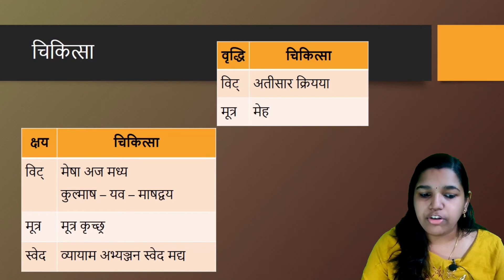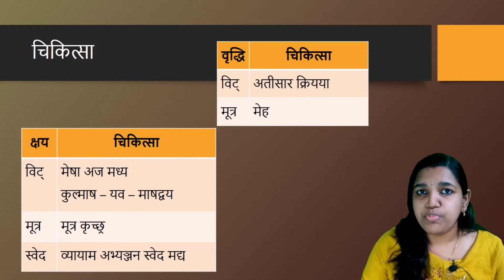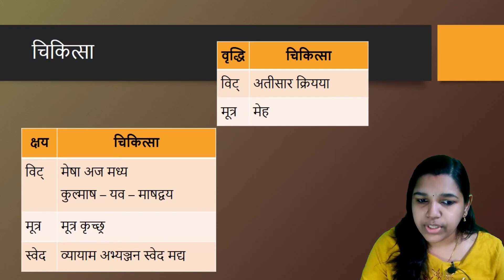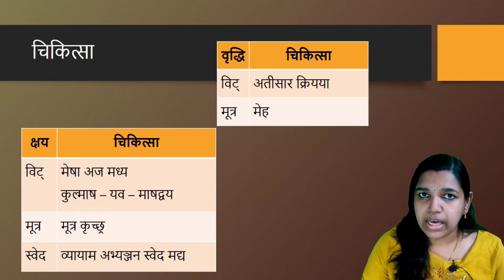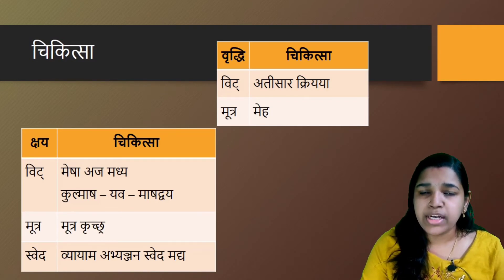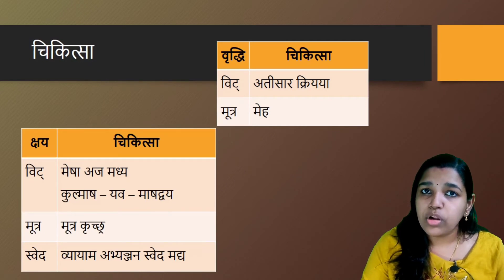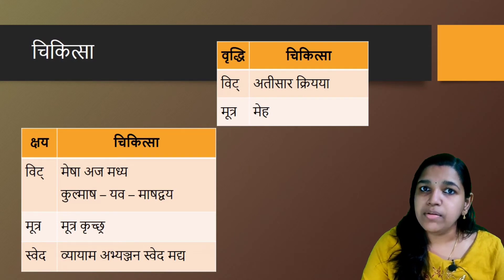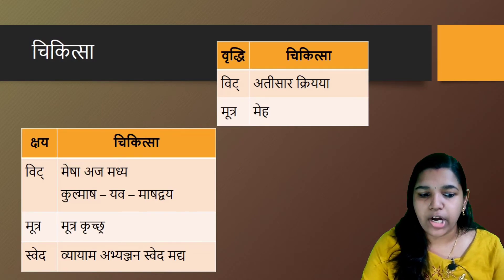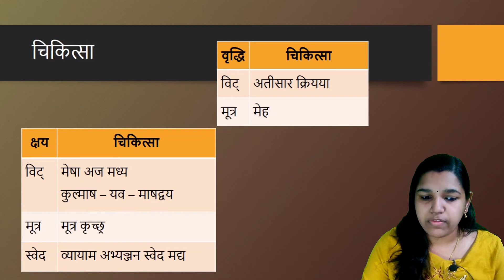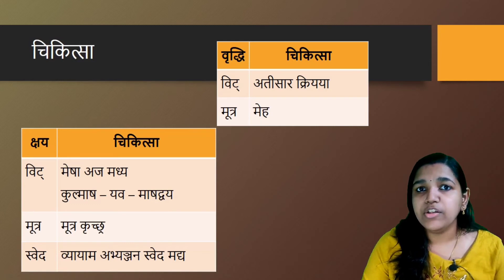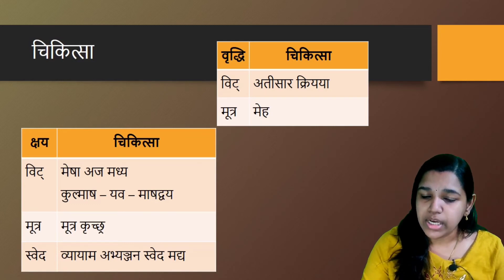In Sweda Kshaya, Vyayama, Abhyanga, Swedana and Madhya have to be given. To summarize Mala management: Vith Vrithi — Atisara Kriya; Mutra Vrithi — Meha Chikitsa; Vith Kshaya — Mesha, Aja Madhya Mamsa, Kulmasha, Yeva and Mashadvaya; Mutra Kshaya — Mutra Krichra Chikitsa; Sweda Kshaya — Vyayama, Abhyanga, Sweda and Madhya.